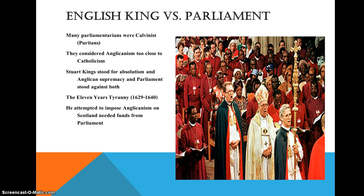Many parliamentarians were Calvinists — Puritans — and they considered Anglicanism too close to Catholicism. The Anglican Church had the king as the head of the church. They were both Protestant denominations against the Catholic Church, but they were different. There's a picture showing what looks like a Catholic assembly, but it is in fact Anglican — many practices in dress and worship were very similar to Catholicism. The Puritans were more strictly Bible-based, as Calvin taught, and got rid of practices that visually resembled Roman Catholicism.